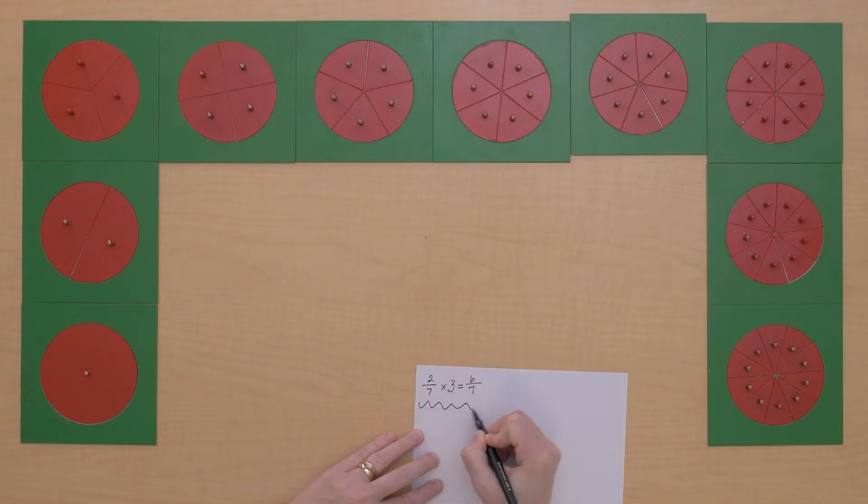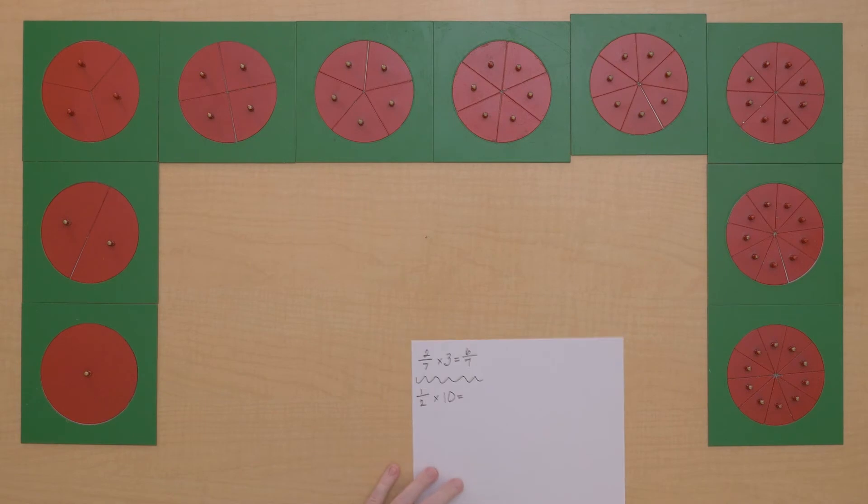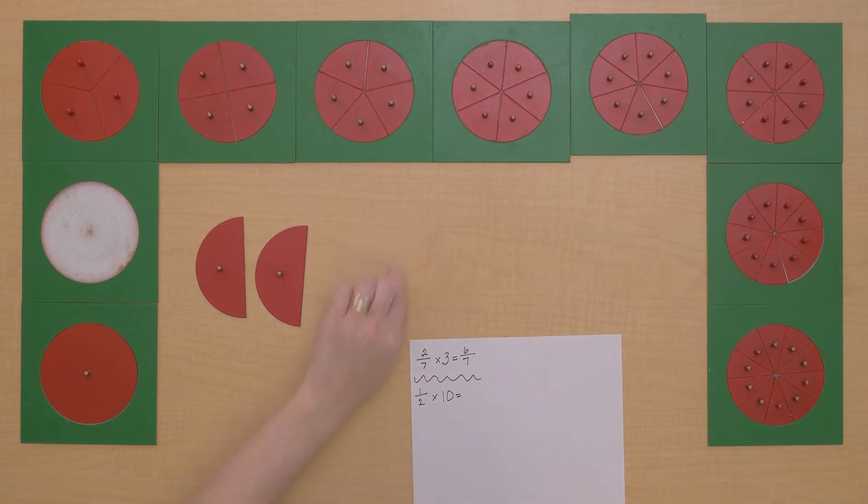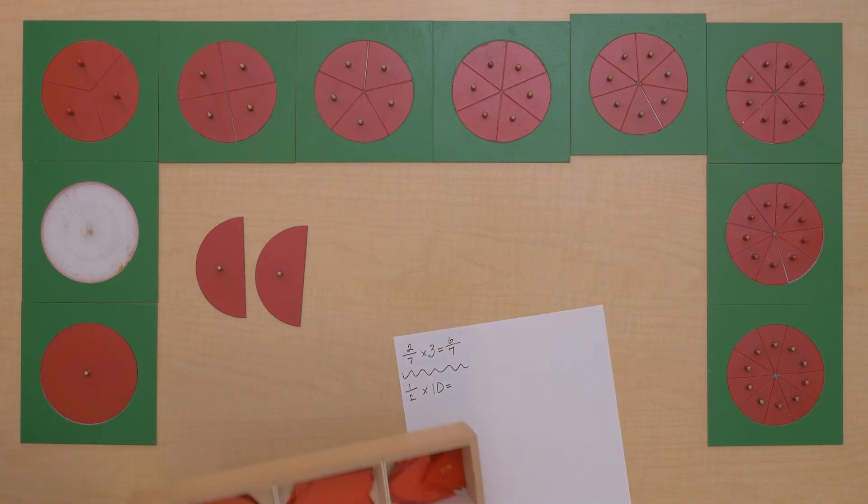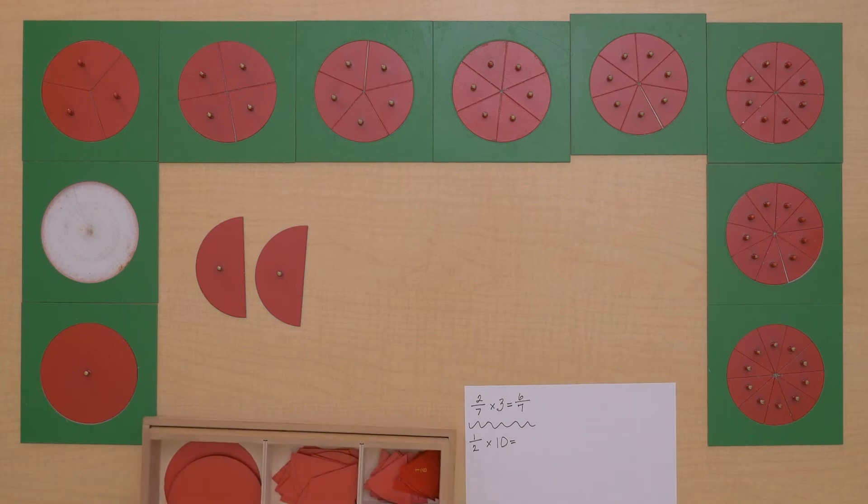Let's do 1/2 times 10. So I have 1/2 one time, 1/2 two times. I do not have enough halves. But we have a box of extra fraction pieces on our shelf that we can use for problems just like this. So now we can place more halves out.